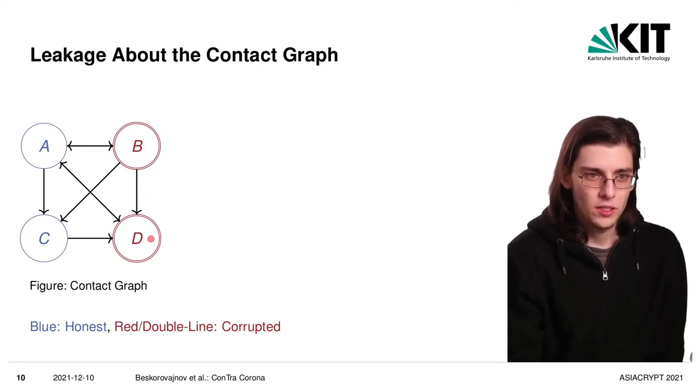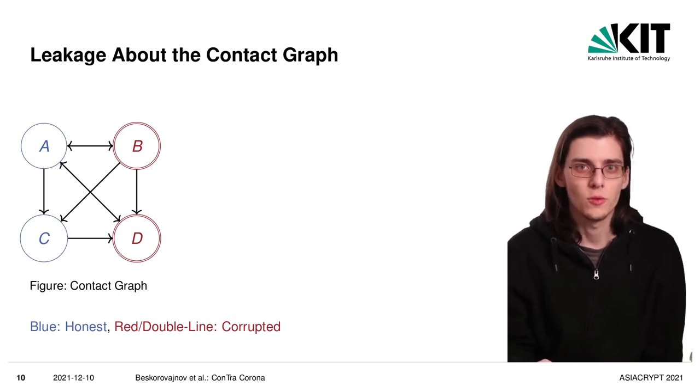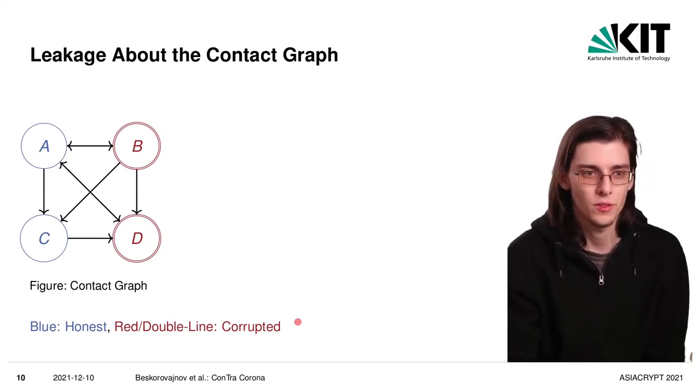And then there are nodes B and D in this graph, and those nodes are corrupted, so the adversary can statically corrupt some participants and all those participants will then try to collaboratively break the security of and break the privacy of some other participants in the system.